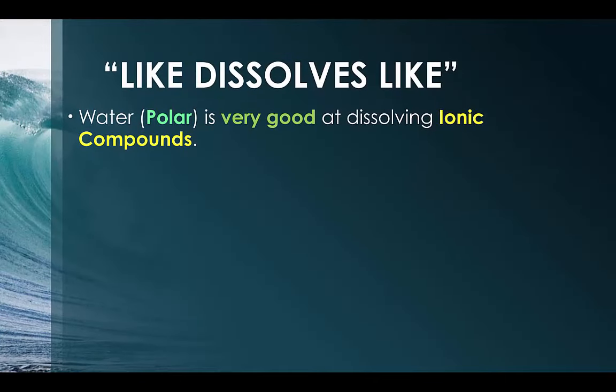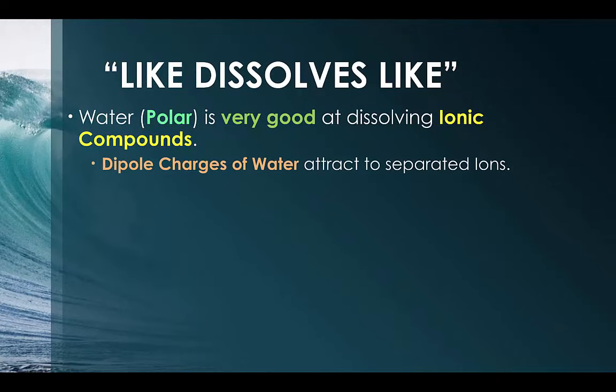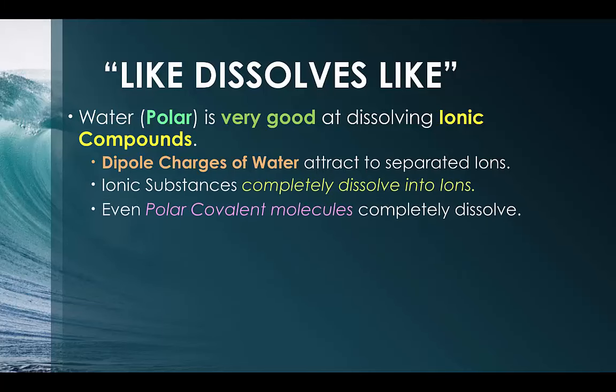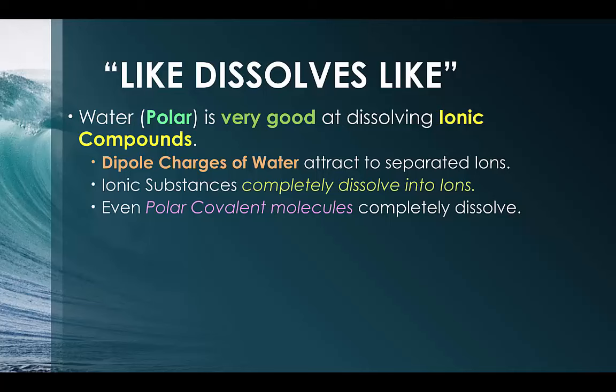Like dissolves like. Water is polar and is very good at dissolving ionic compounds. Water has dipoles — positive and negative charges — that allow it to bind to ionic substances, which dissolve completely in the water. Polar and polar substances can dissolve together, ionic can dissolve ionic, and ionic and polar can dissolve together because they both have positive and negative sides. That is the expression: like dissolves like.